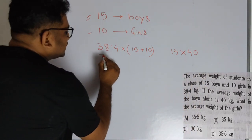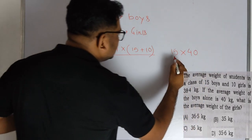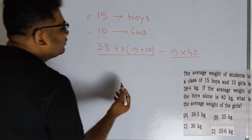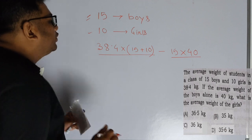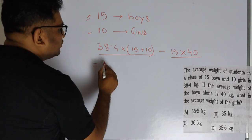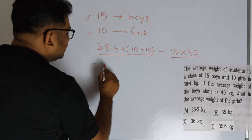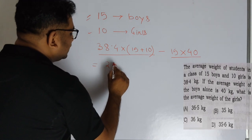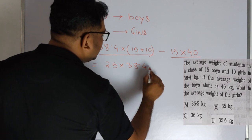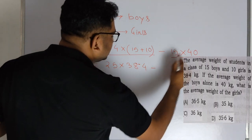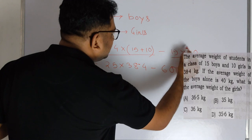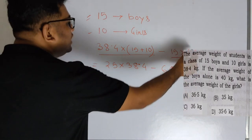So, the total is 25 multiplied by 38.4. Then it is 38.4 minus, which gives 600 directly, because 50 and 60 and 0.